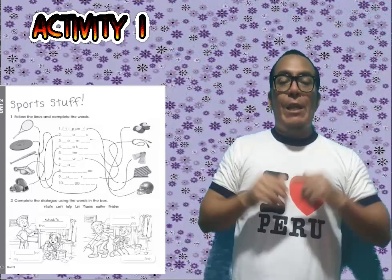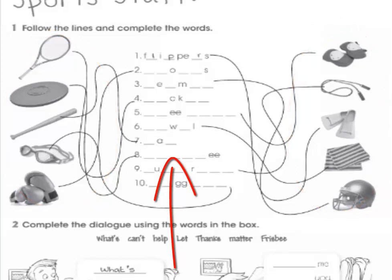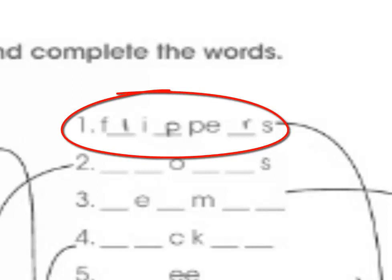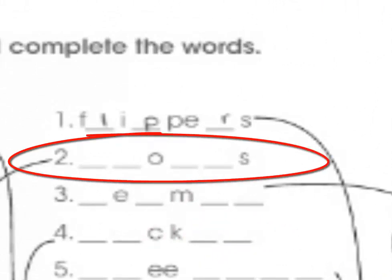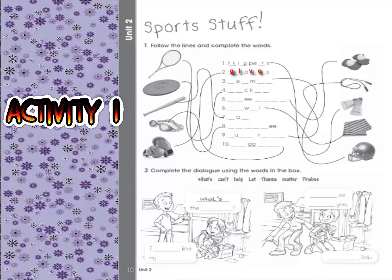Please look at activity number one. The figures are on the side giving you a clue so you can do the activity in the middle. From number one to ten, the names of the sports articles are incomplete. Number one is already done — it's 'flippers,' connected to its picture. What about number two? Very good — we have 'gloves.' According to that pattern, please continue putting the correct names from number three to number ten.